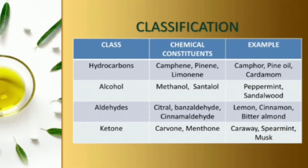Looking at the classification of volatile oils — it is a very complex classification. The table has three columns: the first column is the category, the second column lists the chemical constituents present, and the third column gives examples.